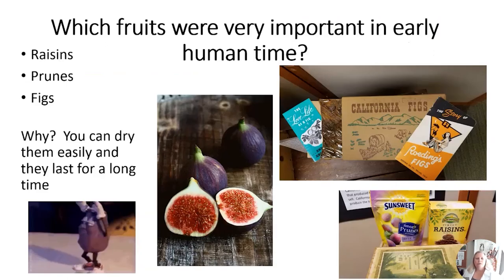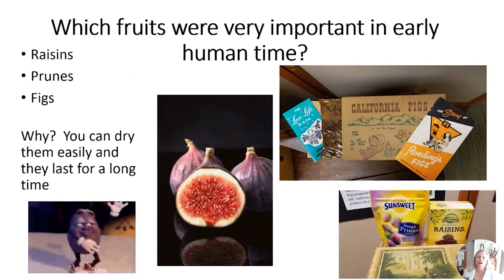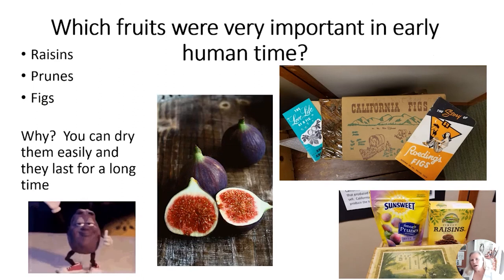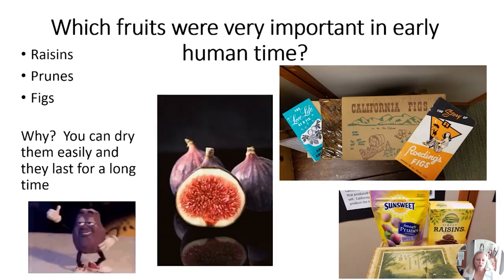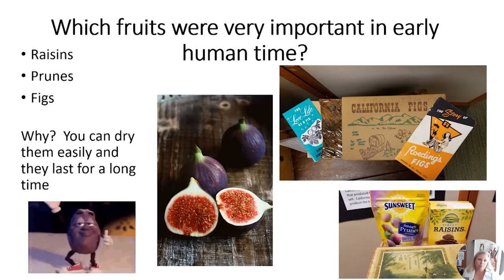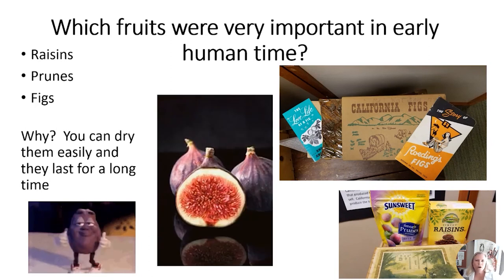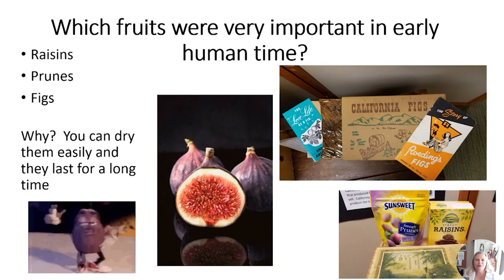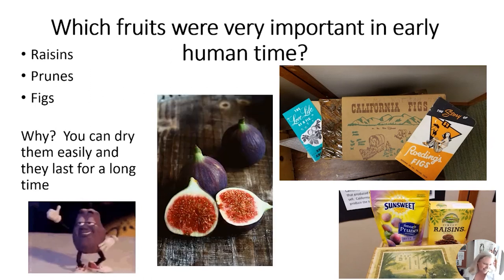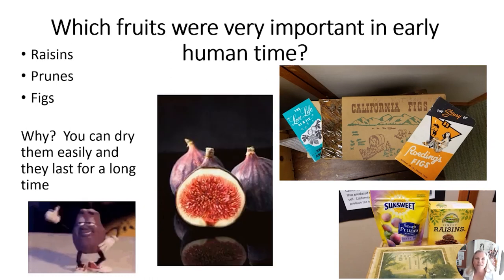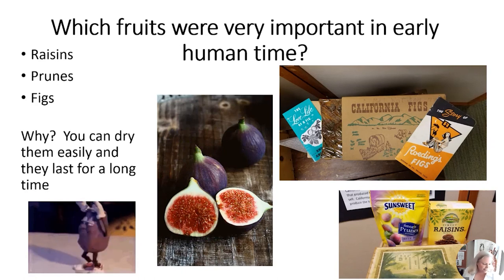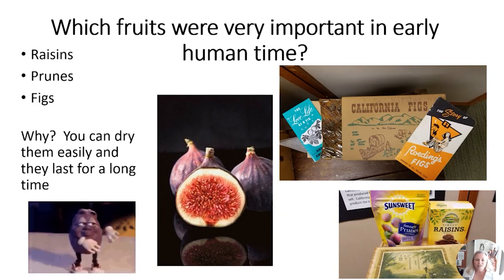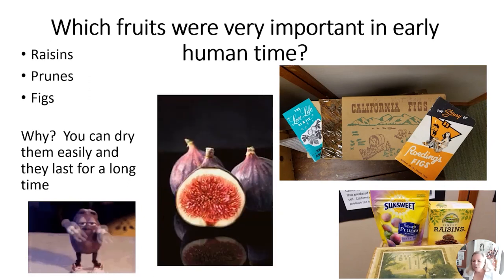Which fruits were important in early human times? Before refrigerators and big ovens, it was important to have foods you could preserve for a long time. That's where we get raisins — grapes that are dried become raisins. California produces most of the raisins in the United States, hence the dancing California Raisins. The middle picture is a fig — anyone eaten fig newtons? Figs are good in a salad too. Figs could dry over time and be kept around a long time, and prunes could also dry and be kept.